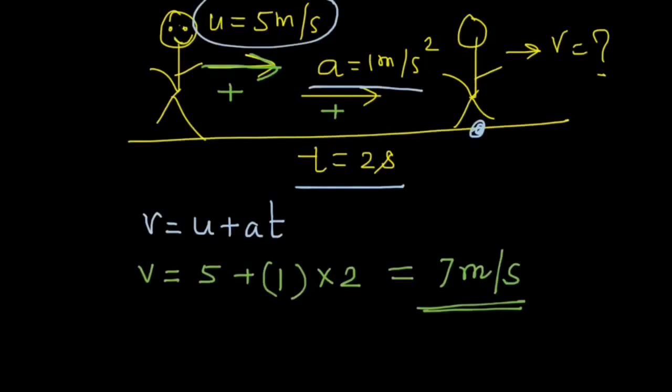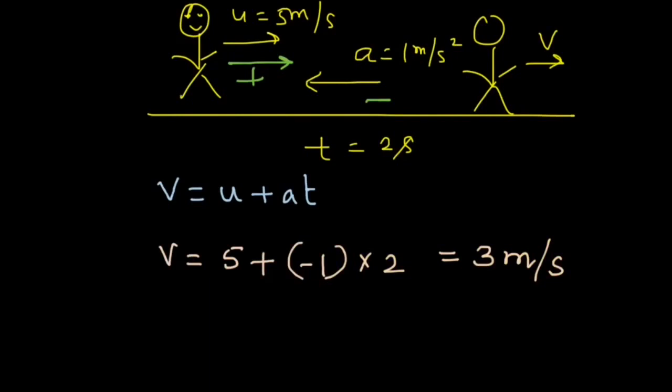With the same values of the variables, we can end up with different answers depending on the direction of these variables. The point to note here is that the equation v equals to u plus at is a vector equation and you must always take care of the direction when applying this equation. See you in the next video.